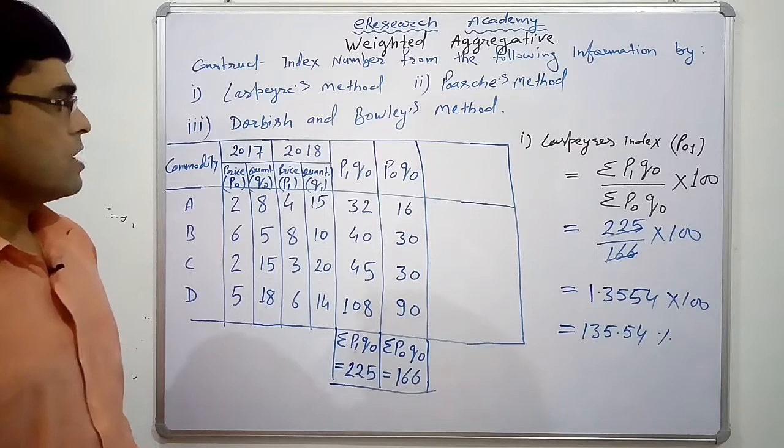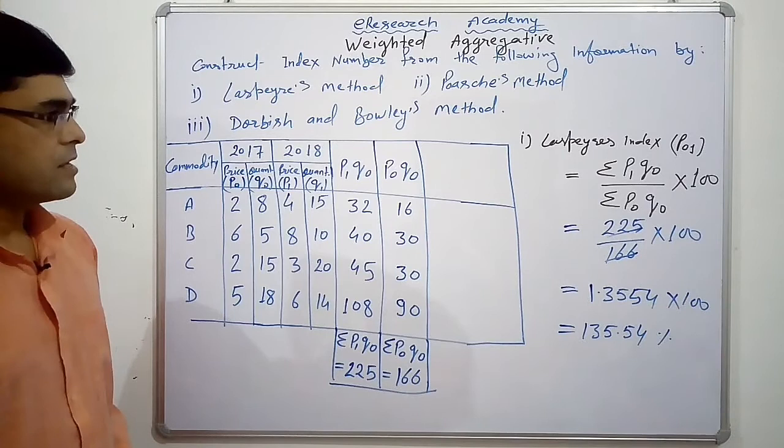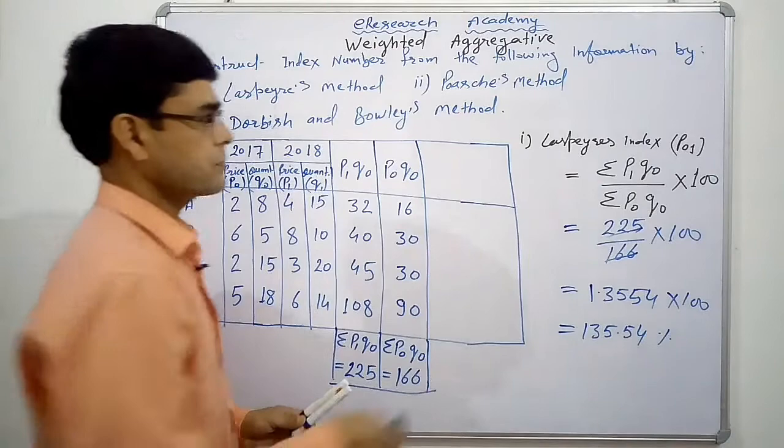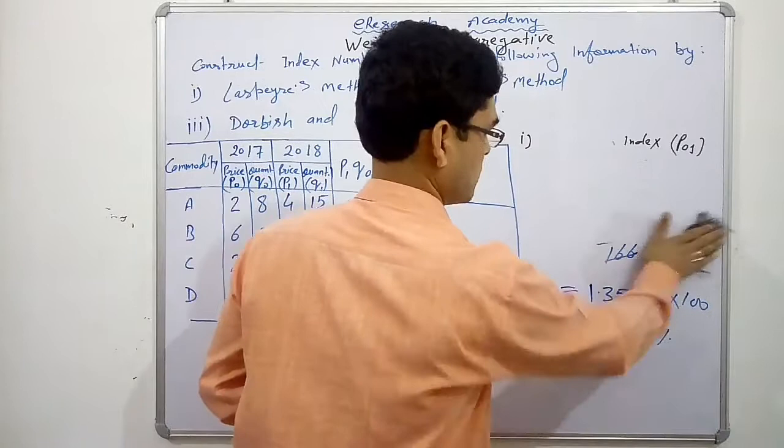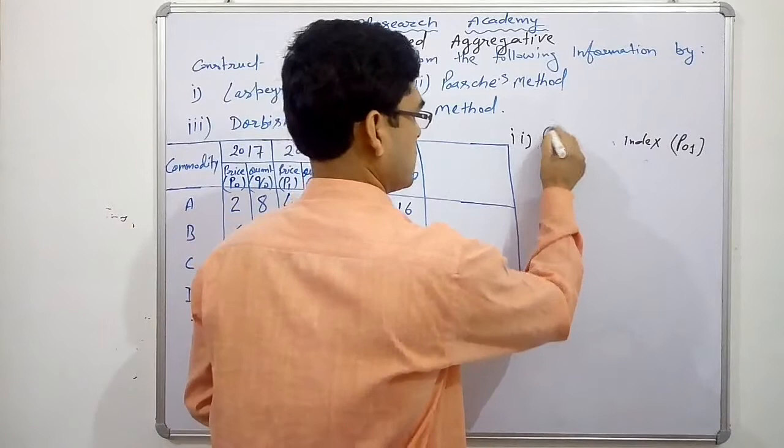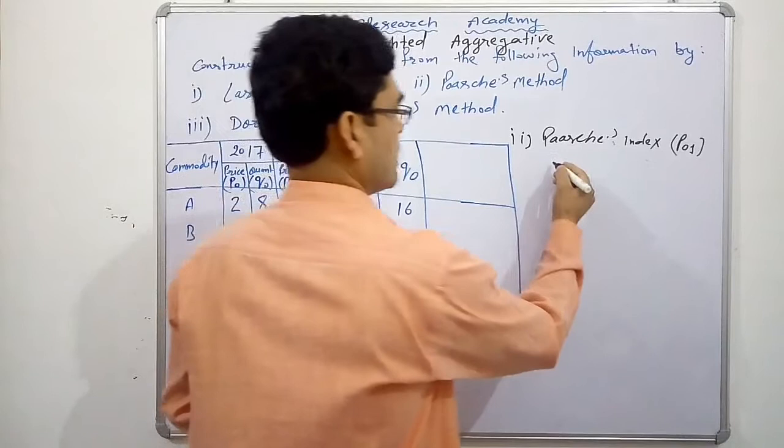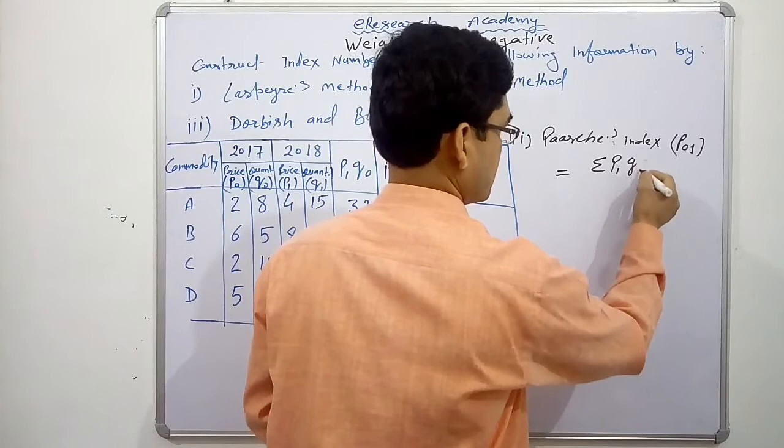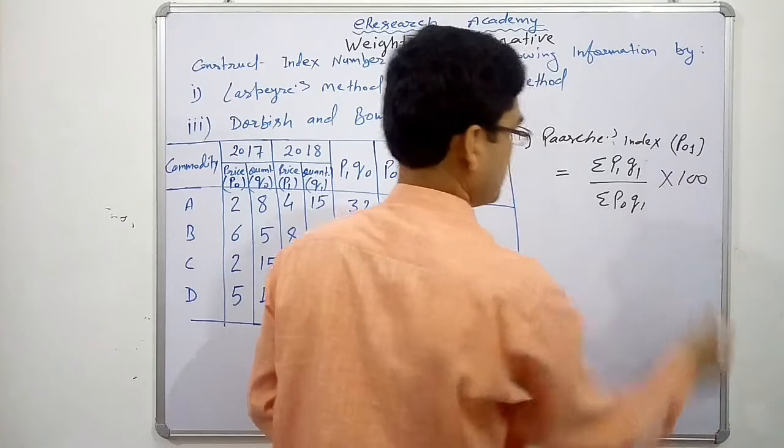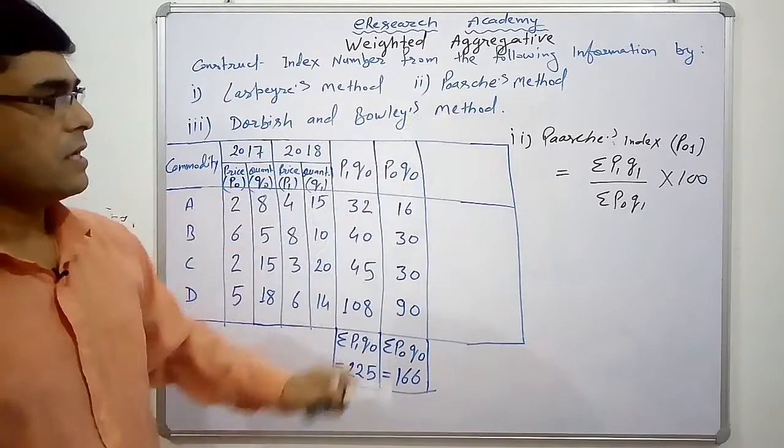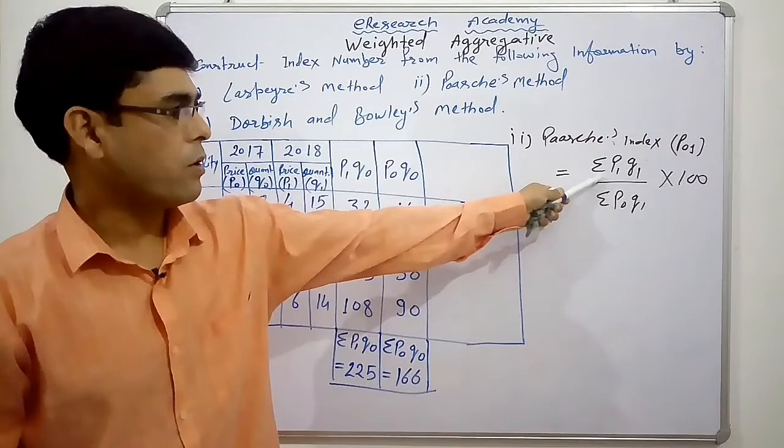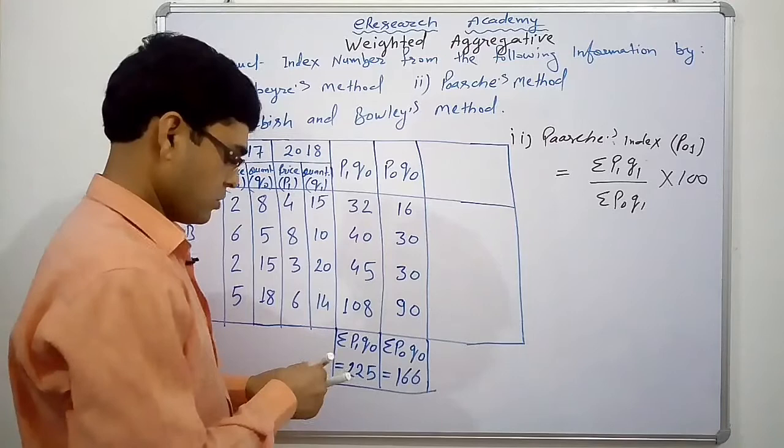You just please have a screenshot of this one, so that we can move on to the second one. Now, we have second method that is passage method, number 2. We have passage index number and our formula becomes sigma P1 Q1 upon sigma P0 Q1 into 100. This is the formula under passage method. So, again we need two columns for solving this problem or getting the answer for index number by this method. So, let's add this column.